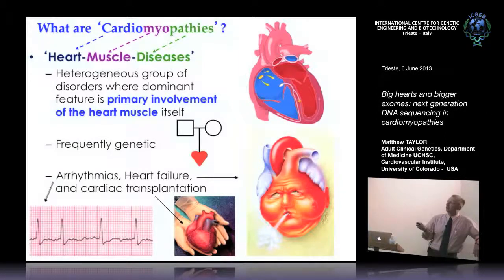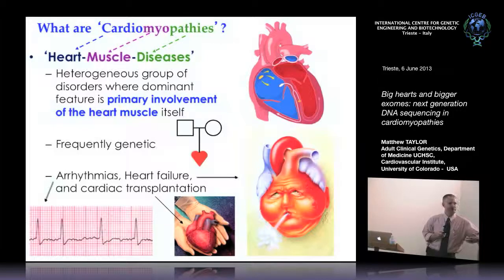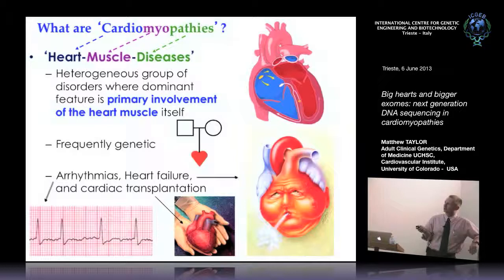The diseases we study are called cardiomyopathies — cardio referring to heart, myo for muscle, and pathies for diseases. So very simply, these are heart muscle diseases. Many things can cause heart disease: drinking a tremendous amount of alcohol or exposure to certain viruses. We're interested mainly in the cases that are genetic, where a father and mother have a child or several children who have heart disease. These genetic forms tend to occur in younger individuals.